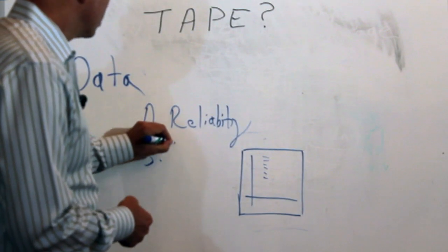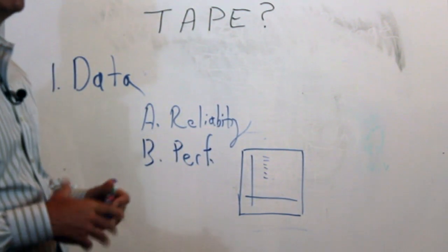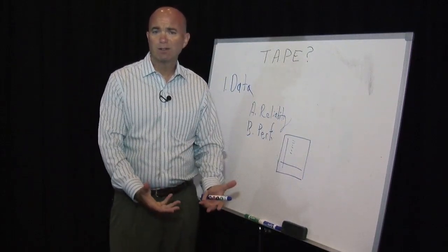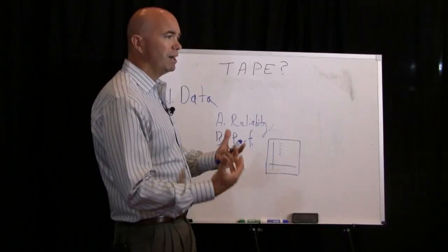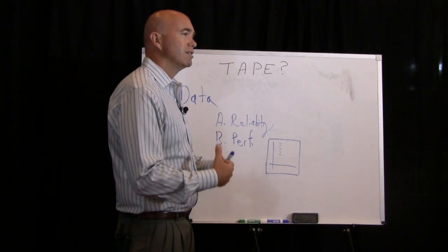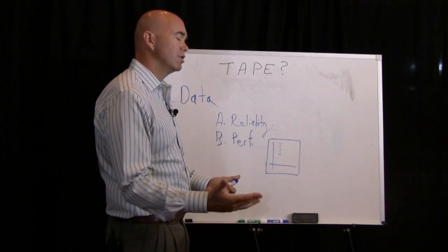The number two concern is almost always performance. And the funny thing, again, just like the statistics, is tape, once you get it moving, is actually faster than disk. But it's that once you get it moving part that generally gets us into trouble. And so it's the latency of tape, not really the performance of tape, that people have a concern with.